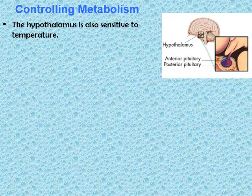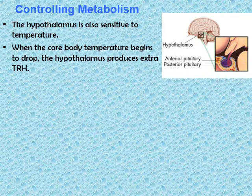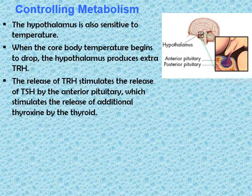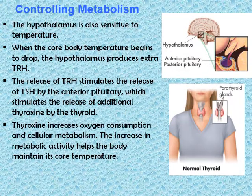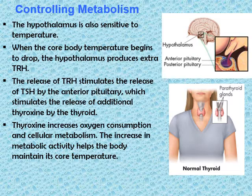The hypothalamus is also a control center for body temperature regulation. When the core body temperature begins to drop, the hypothalamus produces extra TRH. This stimulates the release of TSH by the anterior pituitary, which in turn stimulates the release of additional thyroxine by the thyroid gland. Thyroxine increases oxygen consumption and cellular metabolism, and the increase in metabolic activity helps the body maintain its core temperature.